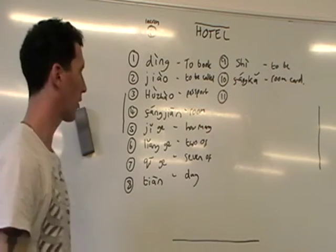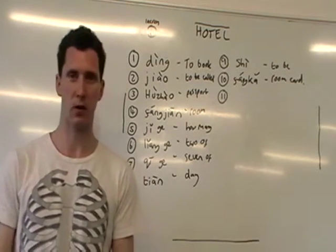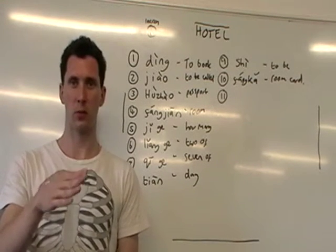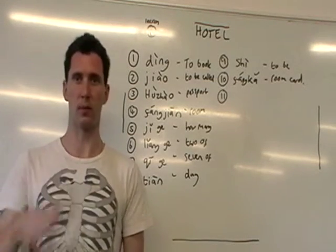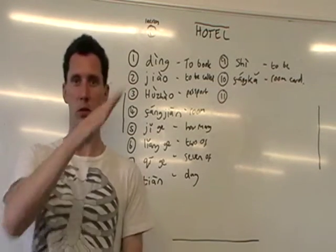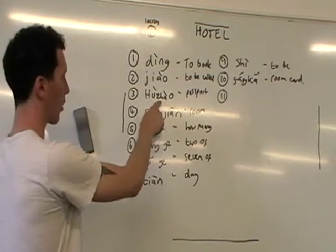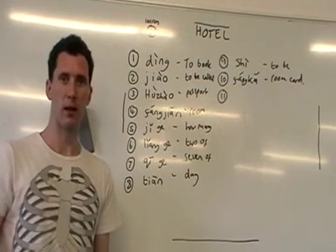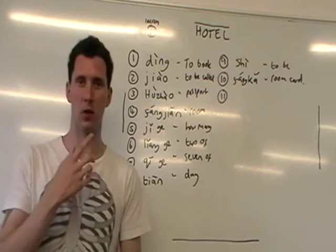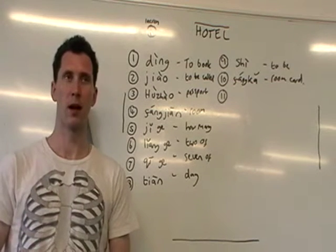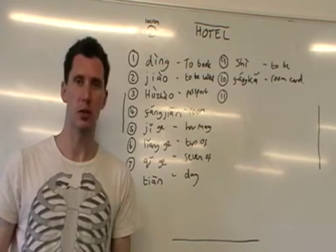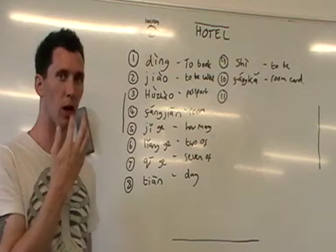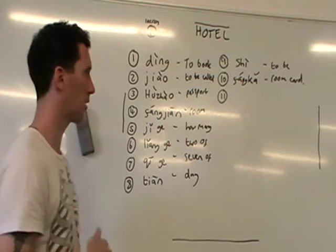Next one is 'passport.' When you go to a foreign hotel, you always need your passport. This is made up of two Chinese characters, so it's two syllables, both in the fourth tone: hùzhào, hùzhào. It's quite a strange spelling — it has a ZH in it. That zhào sound is ZH, and you put your tongue on the roof of your mouth. You'll feel a little space just behind the front of your gum — just put your tongue there and rest it there. It'll take some practice: hùzhào.